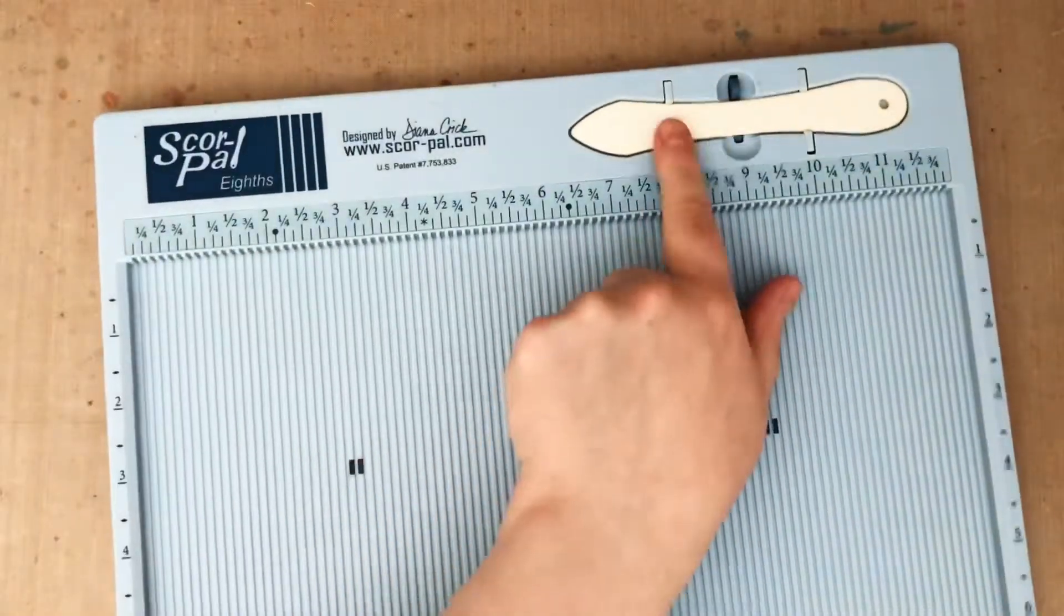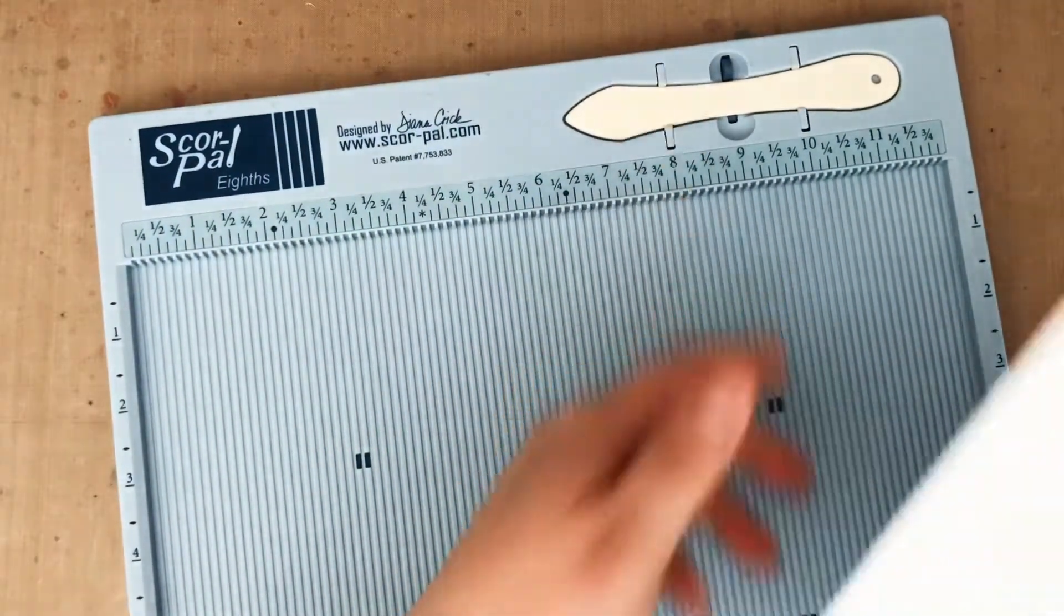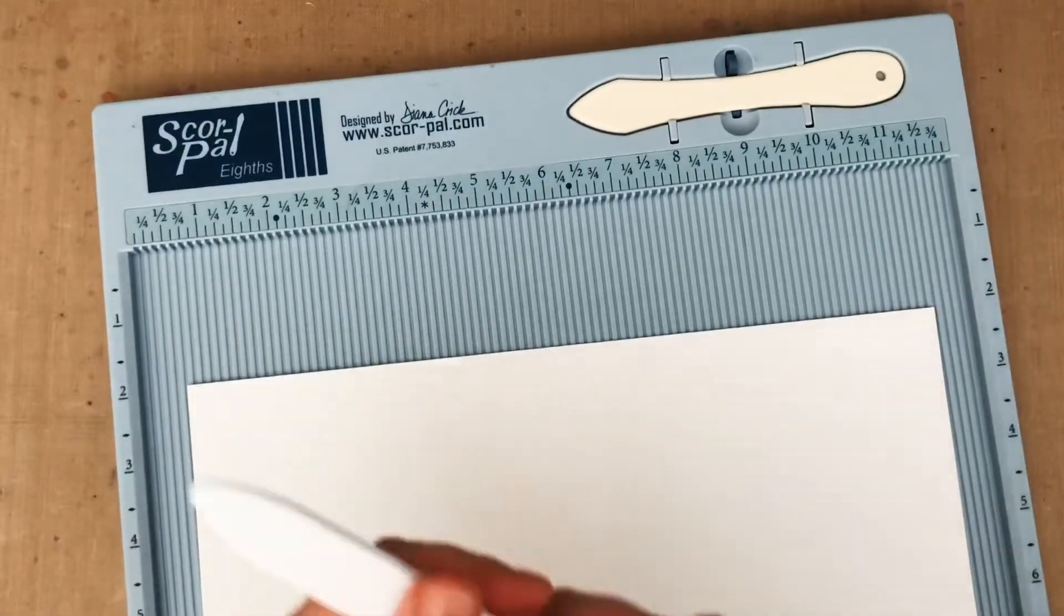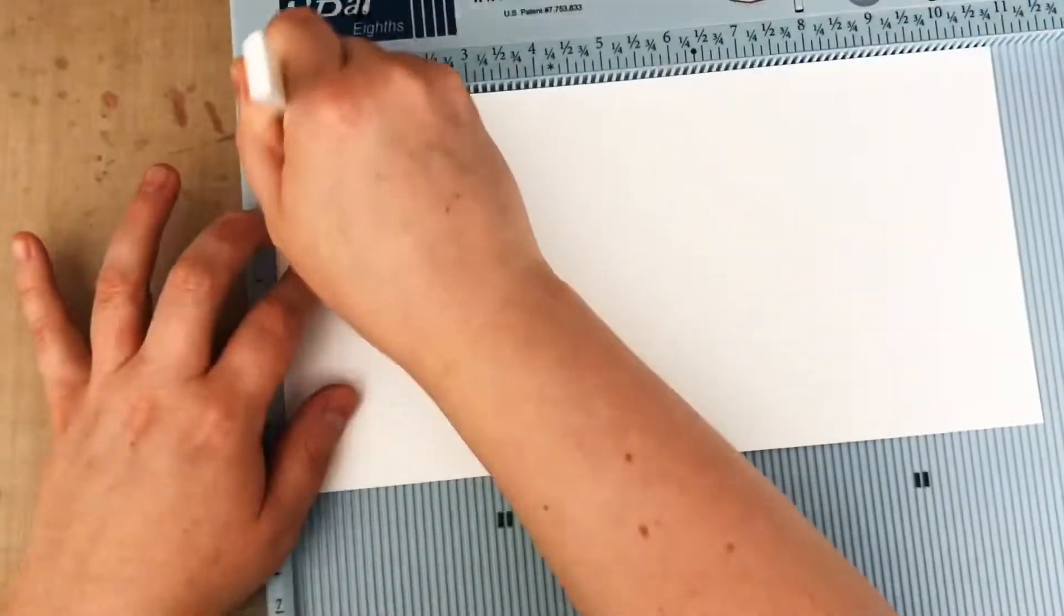So to start, I've got a 5.5 x 10 7/8 piece of solar white cardstock. It's a 110 pound weight. I'm going to grab my scoring board and even though it does come with that little bone folder attached, I really like my Teflon bone folder so much better, so I'm always going to use that.